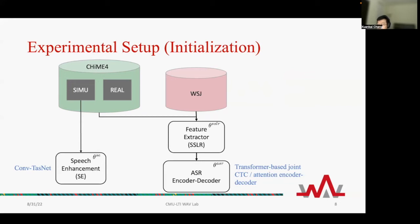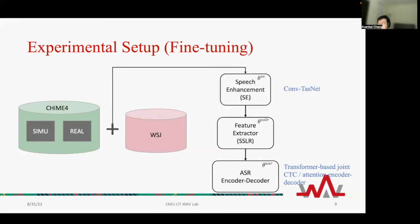Here is the experimental setup. For training, we use both the CHiME-4 and the Wall Street Journal dataset. We use the ConvTasNet structure as the speech enhancement model, and the transformer-based joint CTC-Attention Encoder-Decoder as the ASR model. In our initial setup, the training of the whole model is unstable if we initialize the parameters randomly. So we perform an initialization training step to initialize the speech enhancement and the ASR modules individually. We use the simulation part from CHiME-4 to pre-train the SE model, and use CHiME-4 and Wall Street Journal data together to initialize the ASR part. Later, we fine-tune the whole model using CHiME-4 and Wall Street Journal together.